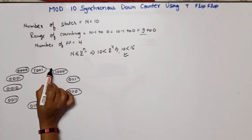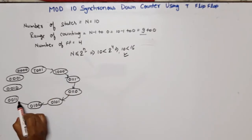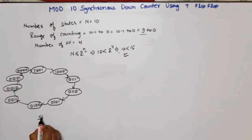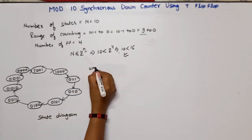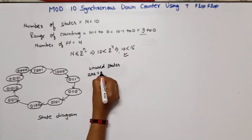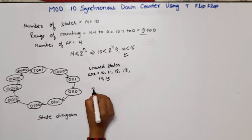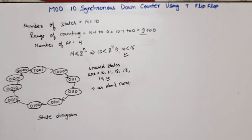Now we will discuss the state diagram. The states count from 9 to 8, 8 to 7, 7 to 6, 6 to 5, 5 to 4, 4 to 3, 3 to 2, 2 to 1, 1 to 0, and 0 back to 9. With 4 flip-flops we have 16 possible states but only 10 are used, so unused states 10, 11, 12, 13, 14, and 15 are treated as don't cares.